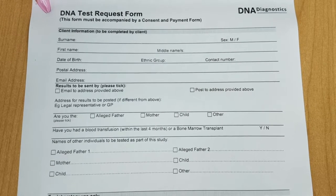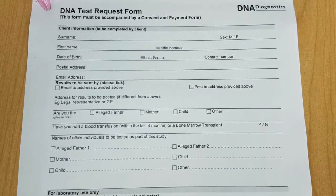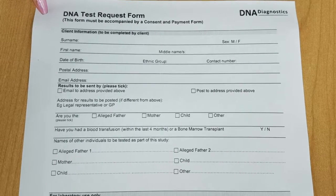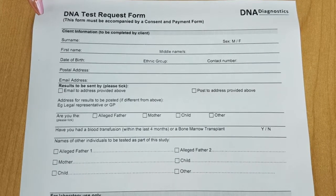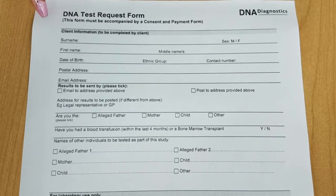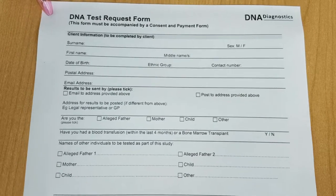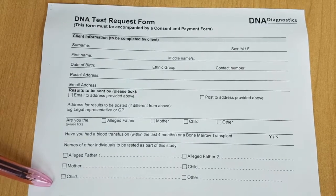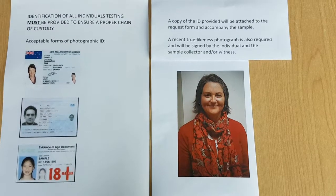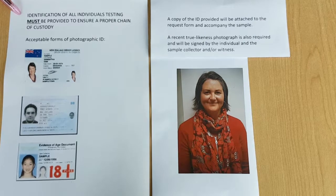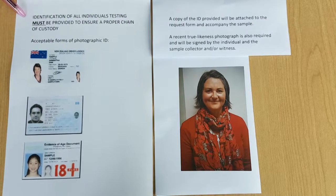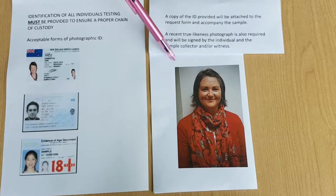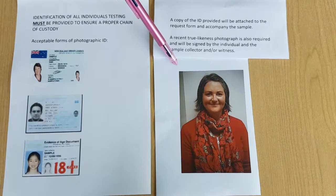First, the DNA test request form should be completed by or for all individuals testing. For example, mother, child, and alleged father should all have a separate form completed. The person taking the collection should ensure that all the information has been completed.